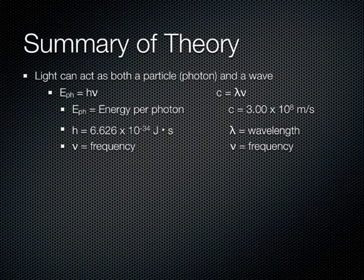Light can act as both a particle and a wave. There are two important formulas for light. The first is that the energy per photon is equal to Planck's constant times the frequency. The second is that the speed of light is equal to the wavelength times the frequency.